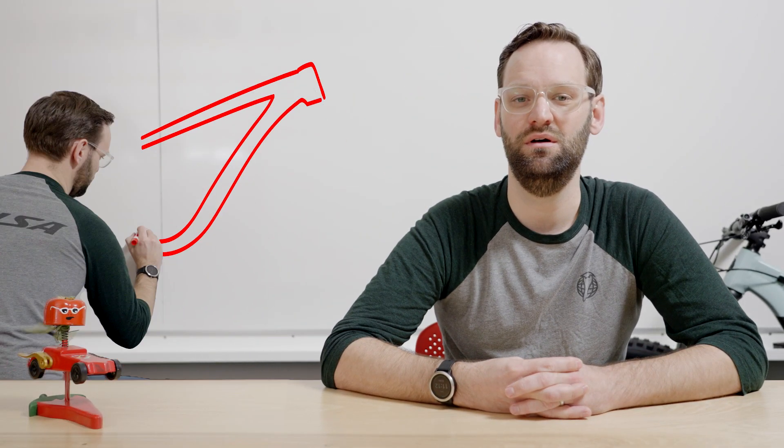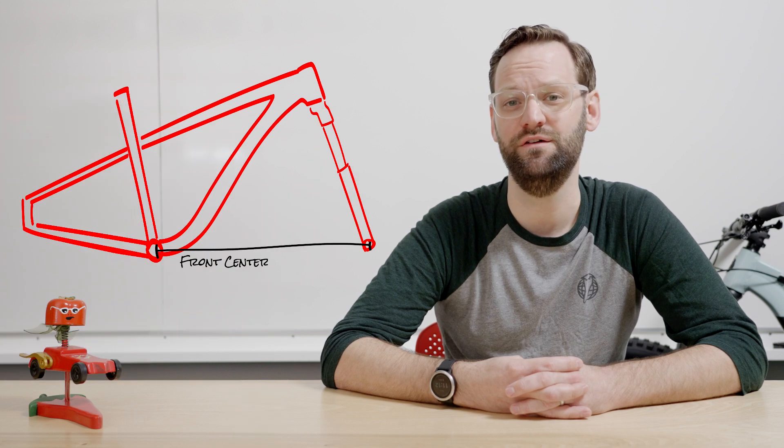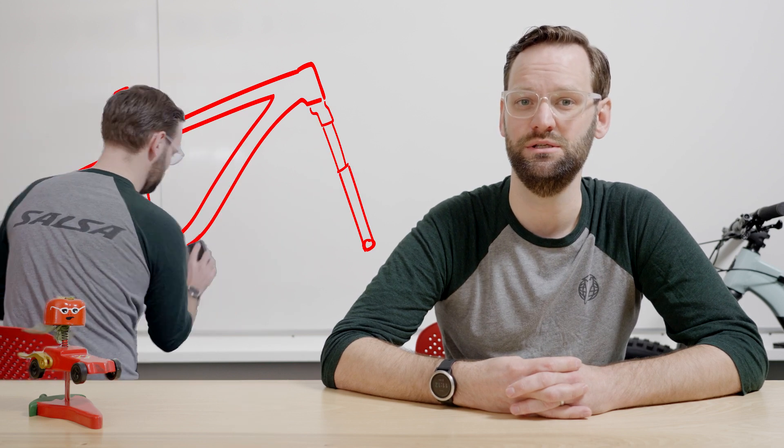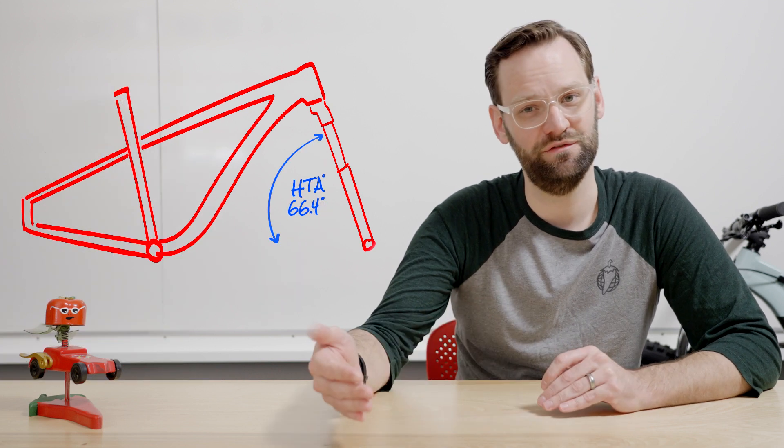An aggressive bike means generally a longer front center, meaning the front wheel is further out ahead of your center of gravity where your body is. It's slacker, meaning the head tube angle is slacker, which helps push that front wheel out in front of you and be more stable when you're going fast downhill.